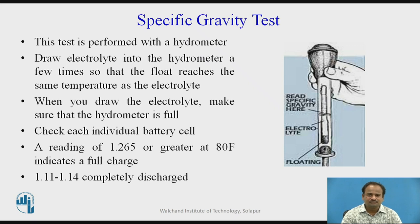The next test is the specific gravity test, performed with a hydrometer. Draw electrolyte into the hydrometer a few times so that the float reaches the same temperature as the electrolyte. When you draw the electrolyte, make sure that the hydrometer is full. Check each individual battery cell. A reading of 1.265 or greater at 80 degrees Fahrenheit indicates a full charge, while 1.11 to 1.14 indicates completely discharged. In this way, the specific gravity test is performed and the battery condition is noted.